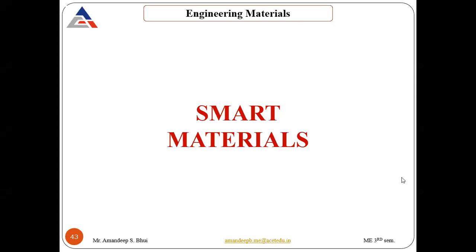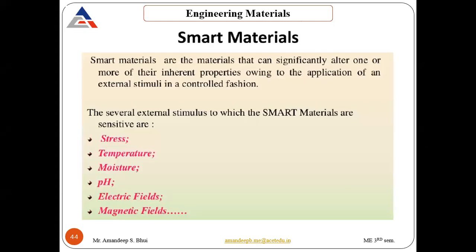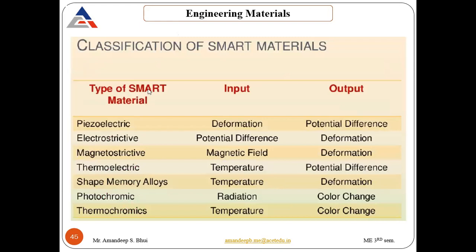Next are smart materials — materials that can significantly alter one or more of their inherent properties upon application of some external force or stimuli in a controlled manner. Smart materials can actuate under stress, high temperature, moisture, varying pH, electric fields or magnetic fields. Types include: piezoelectric materials — input is deformation, output is electricity; electrostrictive materials — input is potential difference, output is deformation; these two are opposite to each other.